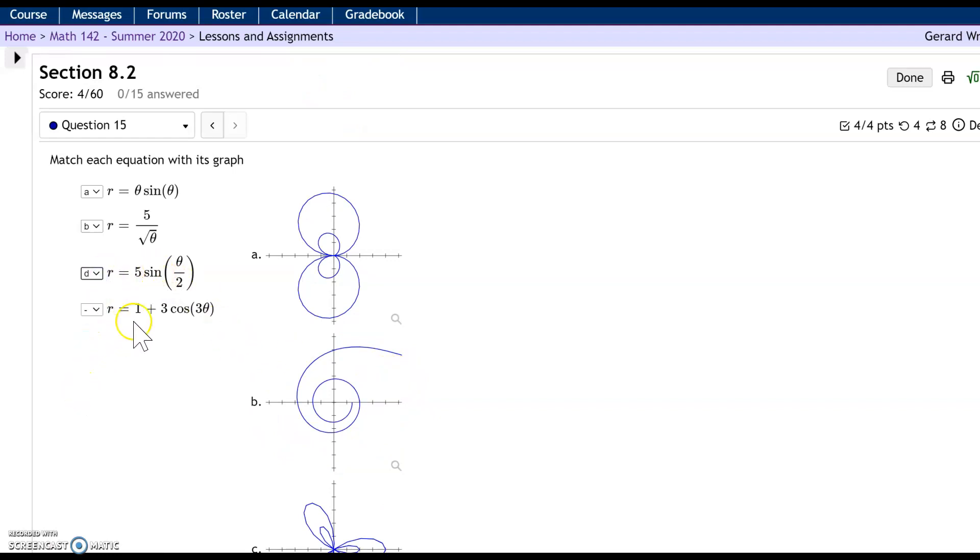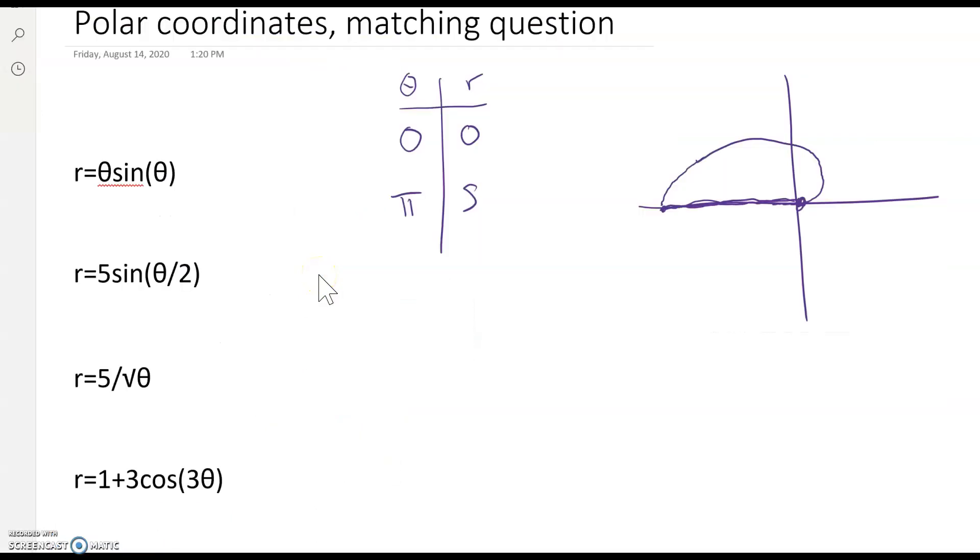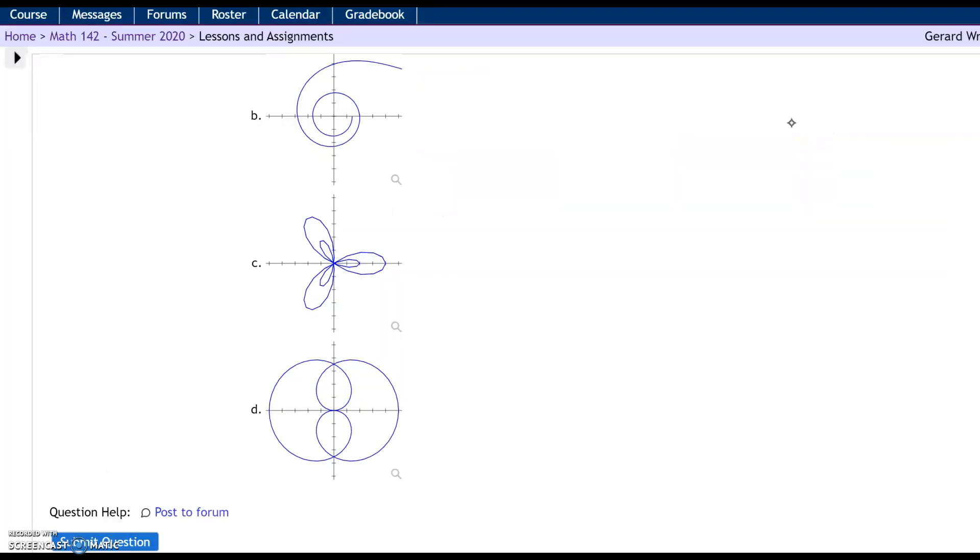And then last one. 1 plus 3 cosine 3 theta. Well, that has to be C because it's the only one left. But let's think about this one for a minute. First of all, you have 3 theta inside. So anytime you have 3 theta, that means everything happens 3 times as fast. Instead of one loop, you're going to get three loops in one cycle, so to speak. And so that explains the three loops right there.